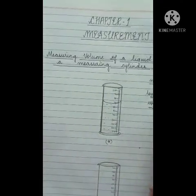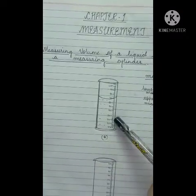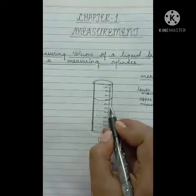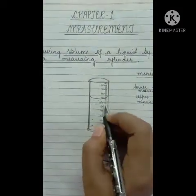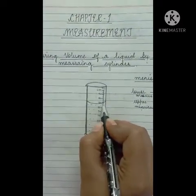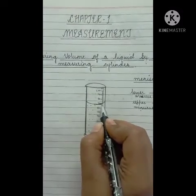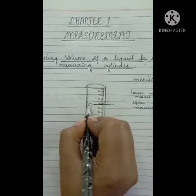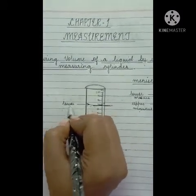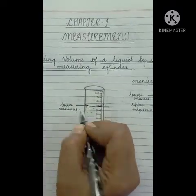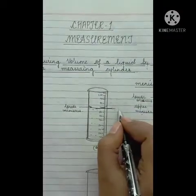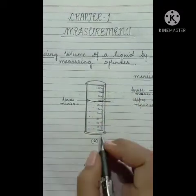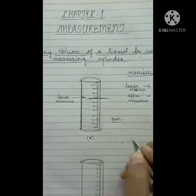You will observe the meniscus. In the case of water, this is the lower meniscus, so we take the reading from the lower meniscus. Make sure your eye is level with the container when taking the reading. Here it is approximately 70 ml, so the volume of water is 70 milliliters.